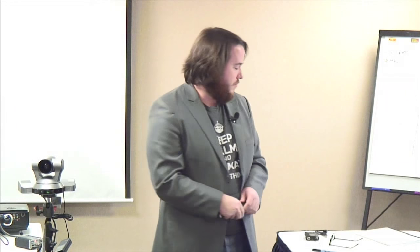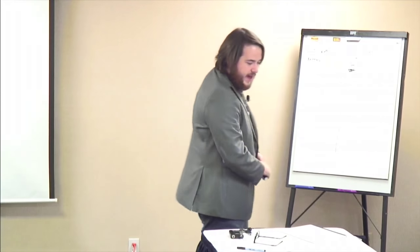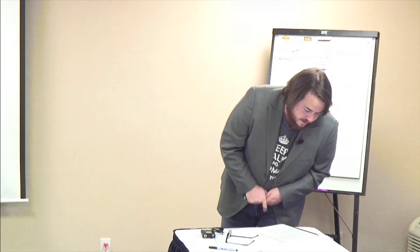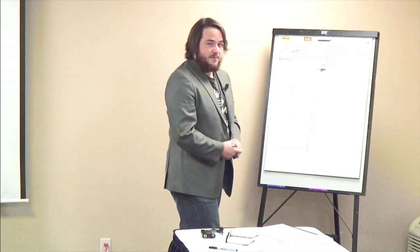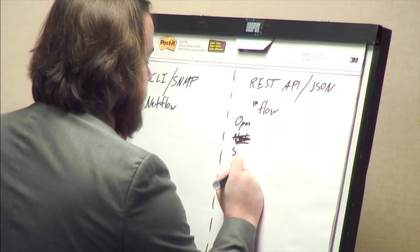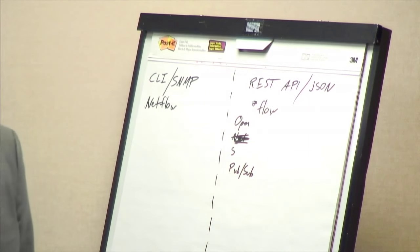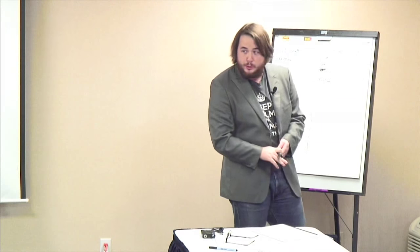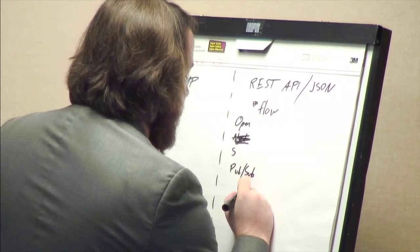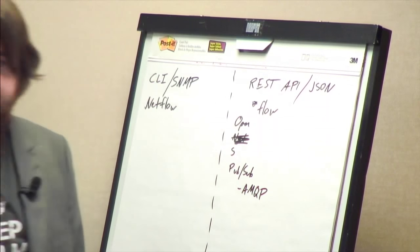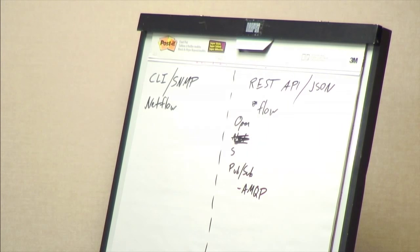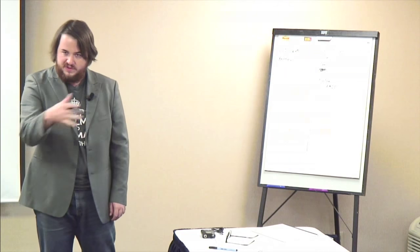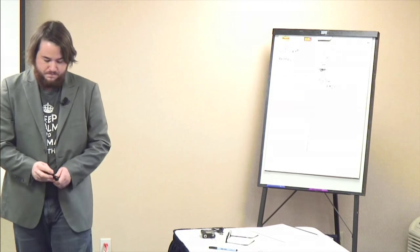So NetFlow will go in the 'old' column — old isn't bad, I'm just kidding. Now here's something I'm using a lot more often: anybody familiar with pub/sub models? I'll write 'pub/sub' — publish/subscribe — message bus, message queue. Let me put some examples here.